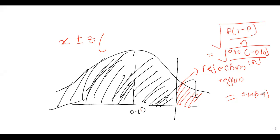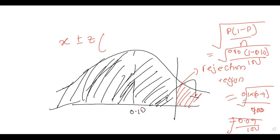So we are computing the standard error. 1 minus 0.1 is 0.9, times 0.1 is 0.09. So we have 0.09 over 100, and then take the square root of that. The square root of 0.0009 is 0.03. So the standard error is 0.03.